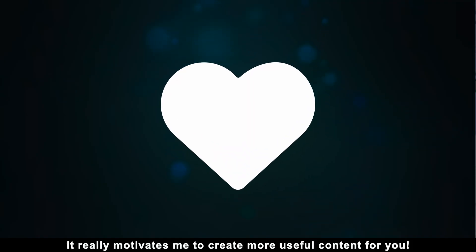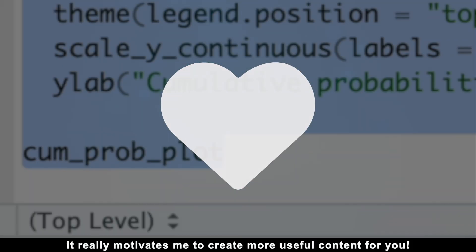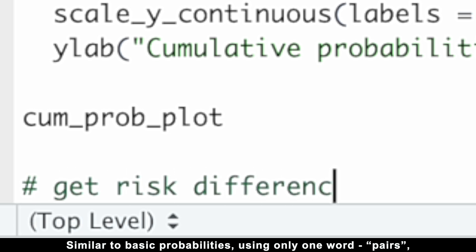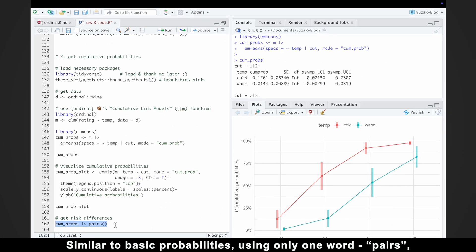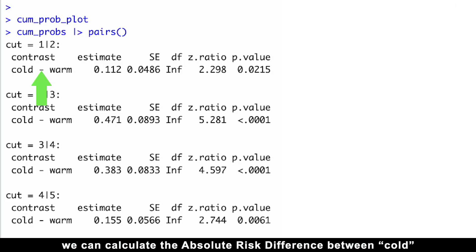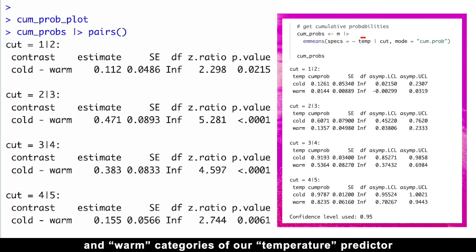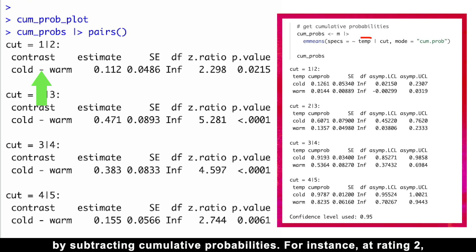Similar to basic probabilities, using only one word, pairs, we can calculate the absolute risk difference between cold and warm categories of our temperature predictor by subtracting cumulative probabilities.